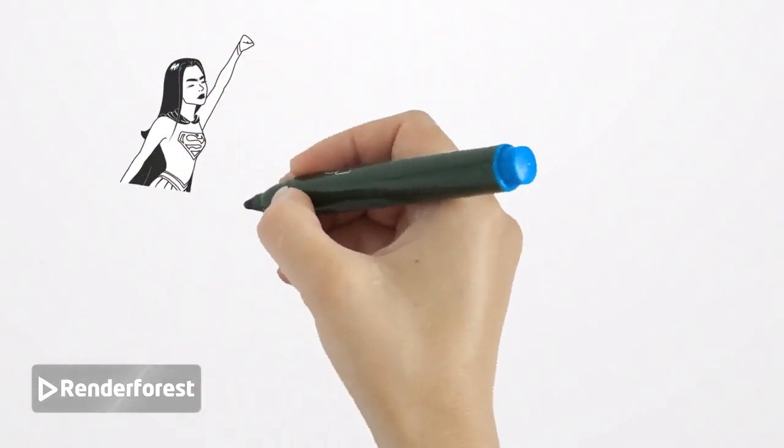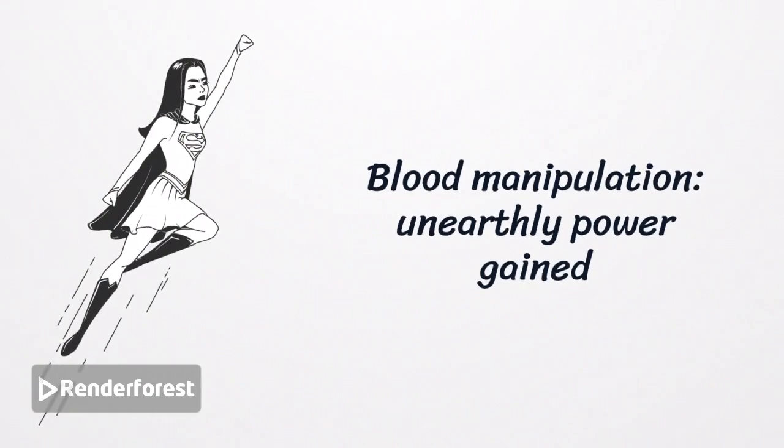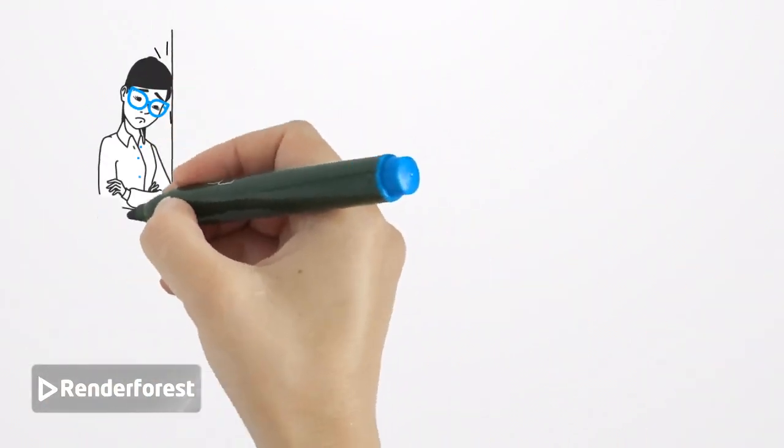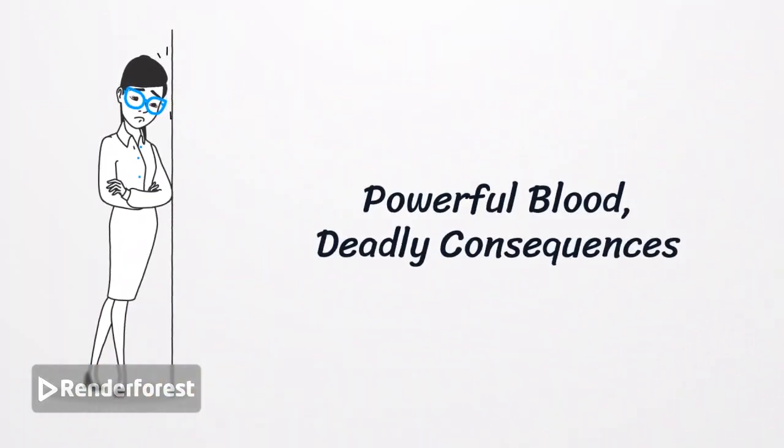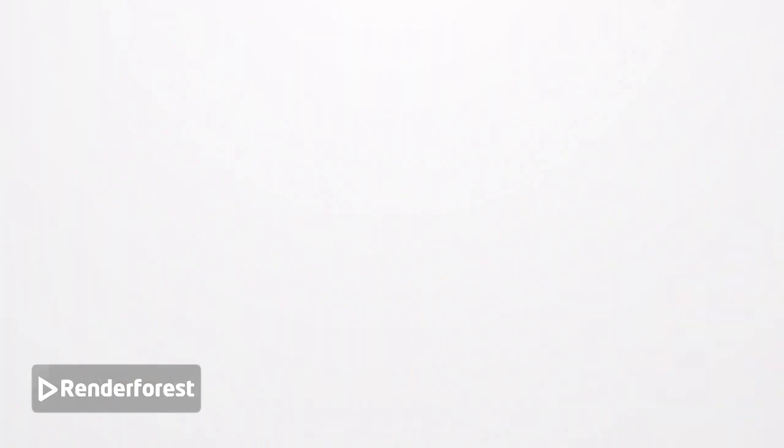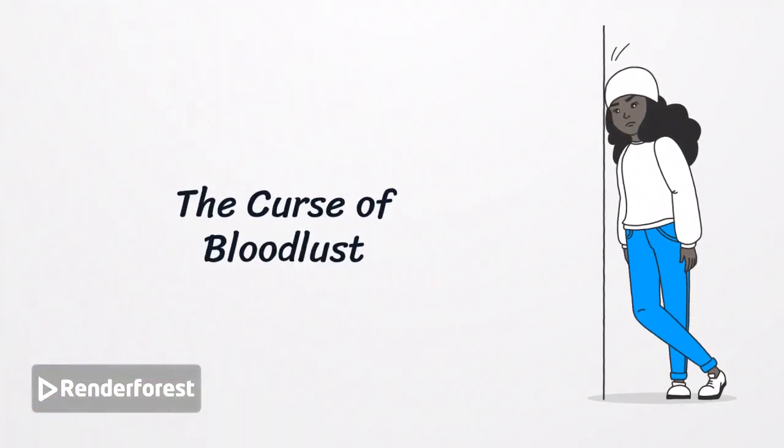She became imbued with powers beyond mortal comprehension, the ability to manipulate blood itself. It coursed through her veins like a living river, granting her strength and longevity, but at a terrible cost. For every life she took, even in self-defense, the thirst for blood grew stronger within her.